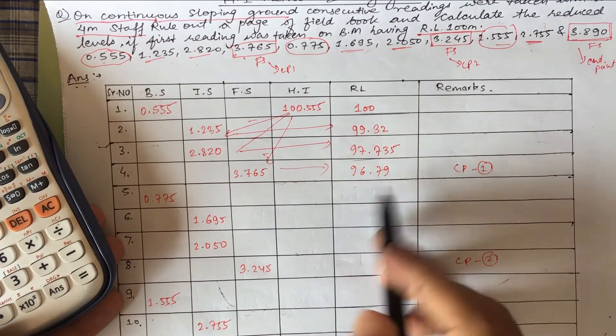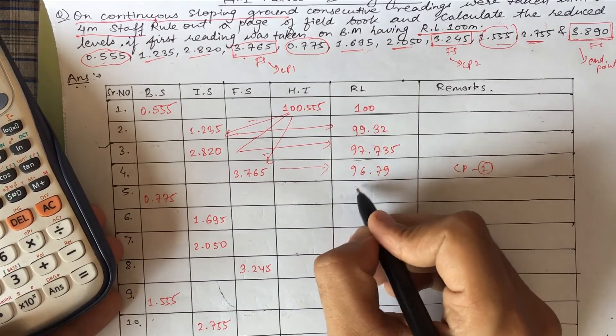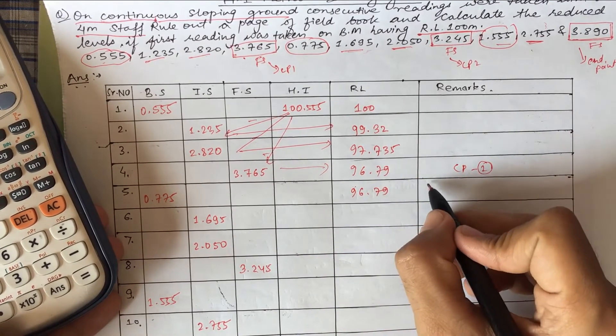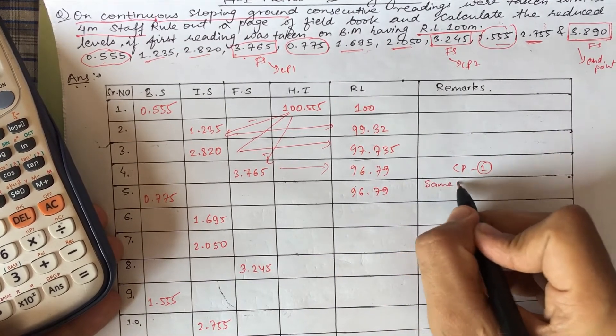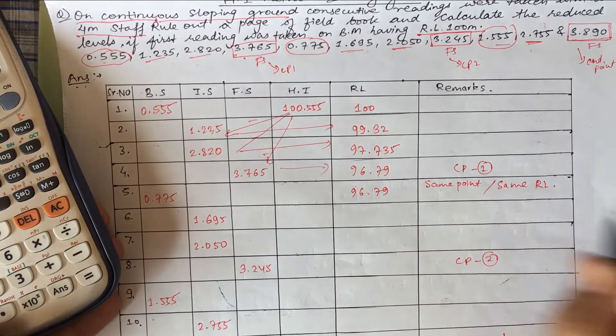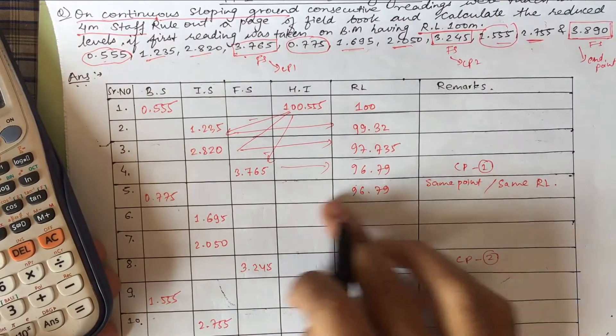There is no point in intermediate side check. We'll simply write this here with a temporary line, so we can see that this is at the same point and same RL.